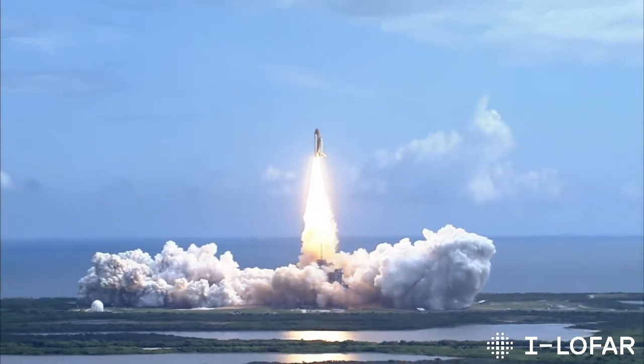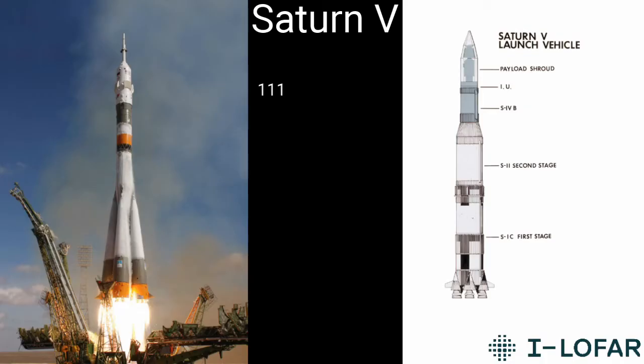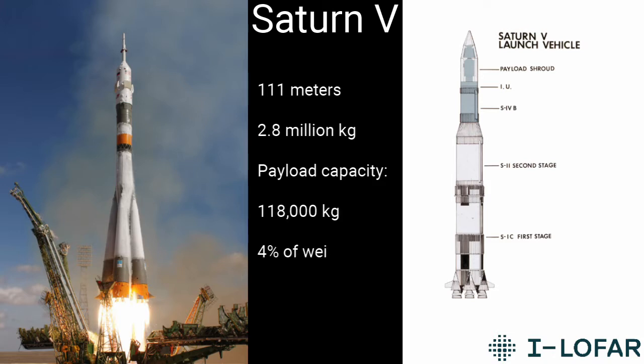Let's take the Saturn V rocket as an example. At 111 meters tall and a weight of 2.8 million kilograms, it is one of the biggest rockets ever made. Yet, only the tip of this massive rocket can be used for sending items to space. This is called the payload. It can carry up to 118,000 kilograms, which may seem a lot, but that is only 4% of its total weight.